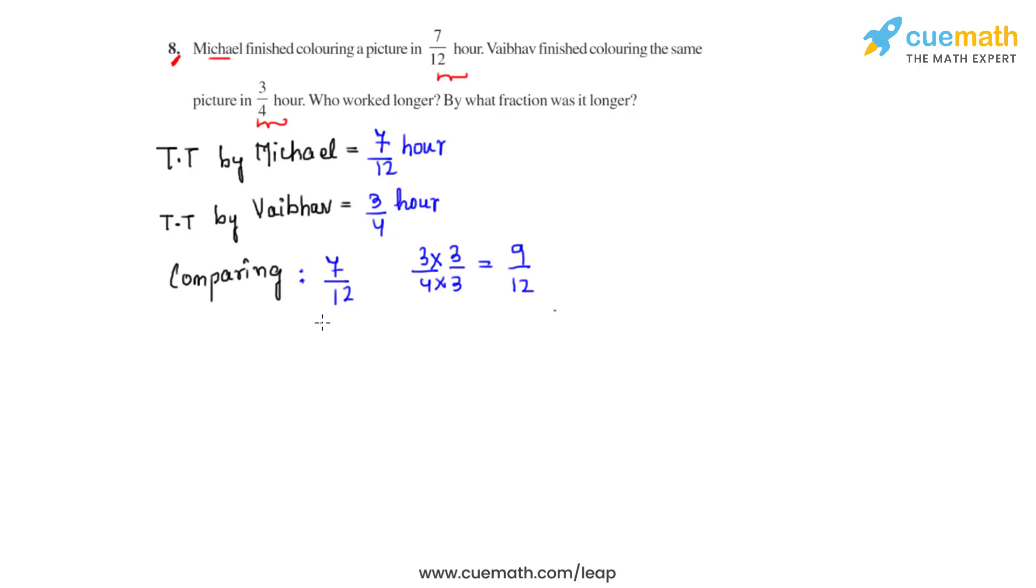So now that the denominators are same for both the fractions, we can easily compare the numerators and find out who worked longer. As 9 is greater than 7, we can say that Vaibhav worked longer than Michael because 9 over 12 will be greater than 7 over 12. 9 over 12 was the time taken by Vaibhav and 7 over 12 was the time taken by Michael.